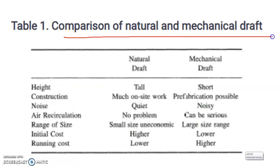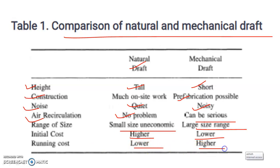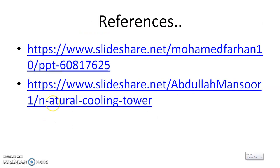Here is a comparison between natural draft and mechanical draft cooling towers. On the basis of height: natural draft is tall, mechanical draft is very short. Construction: natural draft requires more on-site work; prefabrication is possible for mechanical draft. Noise: natural draft is very quiet, mechanical draft is noisy. Air recirculation: no problem in natural draft, but a serious problem in mechanical draft. Size range: small and economical options exist in mechanical draft, but large size range is available. Initial cost is higher for natural draft but running cost is lower; the opposite is true for mechanical draft.